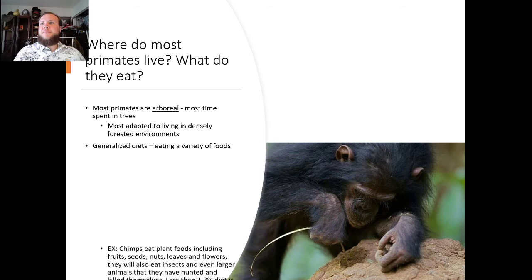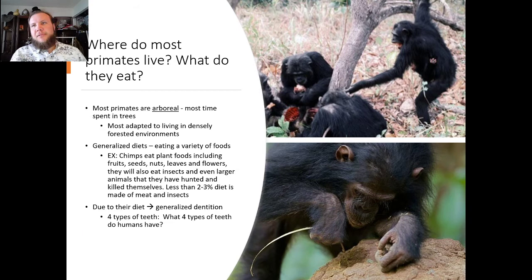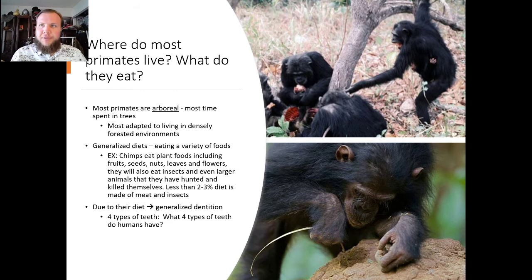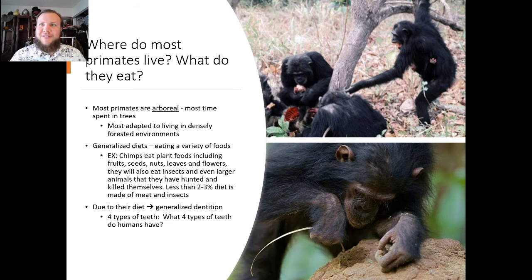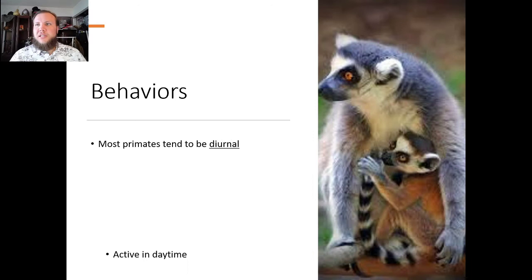Most primates are arboreal — they spend most of their time in trees. Primates are adapted to living in densely forested environments, though a couple are not. They have generalized diets, eating a variety of foods. For example, chimps are omnivores and eat everything from monkeys to insects to nuts, fruit, and leaves. Like us, they have generalized dentition with four types of teeth: incisors, canines, premolars, and molars. Primates have these types of teeth too, plus another type we'll discuss.